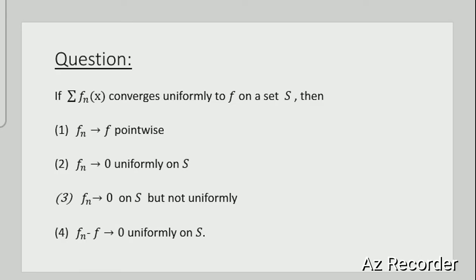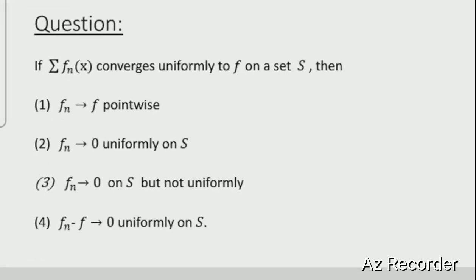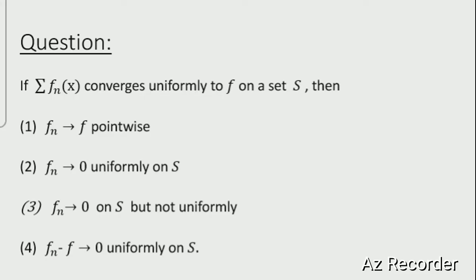Now let us see the next question. If the series Σf_n(x) converges uniformly to f on a set S, then which option is correct? Option 1: f_n converges to f pointwise. Option 2: f_n converges to 0 uniformly on S. Option 3: f_n converges to 0 on S but not uniformly. Option 4: f_n - f converges to 0 uniformly on S.